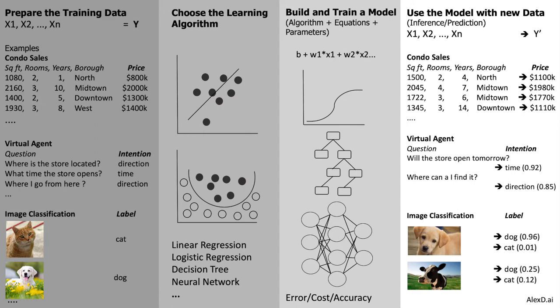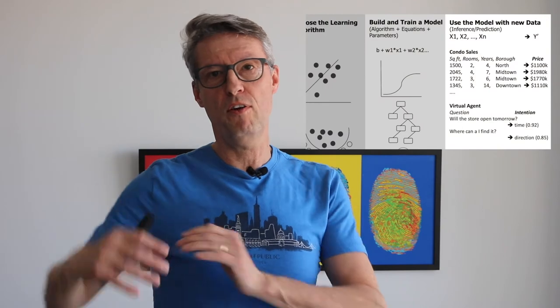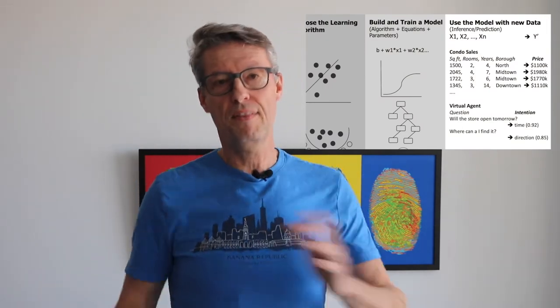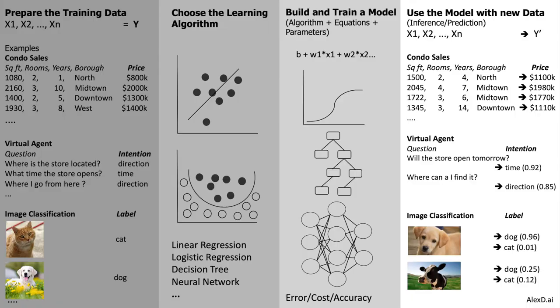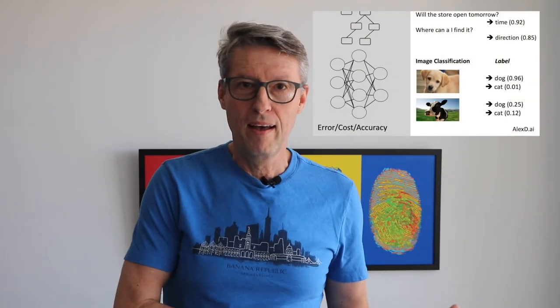In the second example, the chatbot, you have a new question such as 'Will the store open tomorrow?' and the model returns the intention 'time,' so your answer might show the store's schedule for tomorrow. In the third case, you have a new photo. If it is a dog, the model returns a high probability — say 0.96 — that it is a dog and not a cat. But if the picture is a cow, which is neither a dog nor a cat, the probability for both classes will be very low and the algorithm will determine it is neither a dog nor a cat.